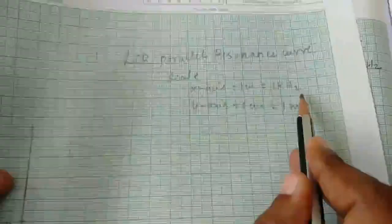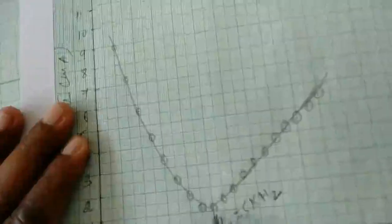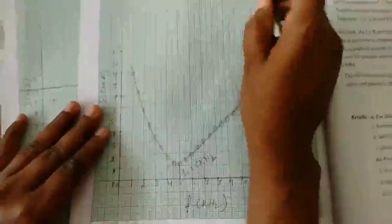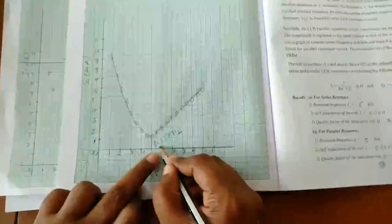After recording all readings from 1 kHz to 10 kHz, plot the frequency versus current graph for the parallel resonance circuit. Set the scale: for the x-axis, 1 cm equals 1 kHz; for the y-axis, 1 cm equals 1 mA. Take frequency along the x-axis and current along the y-axis. For 1 kHz, the current is 8.95 mA, and for 1.5 kHz, it is 7.26 mA. Plot all readings to obtain the LCR parallel resonance curve, where the current attains a minimum value. Draw a perpendicular from that minimum point to the x-axis to obtain the resonance frequency.